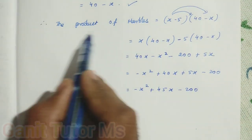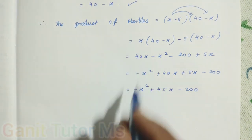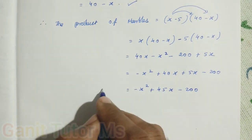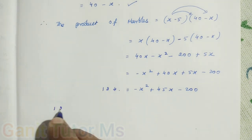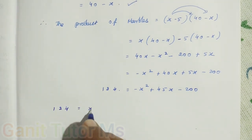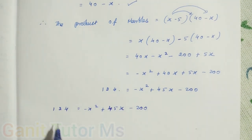What they given is the product of marbles. How much they given? It is 124. So the product of marbles, which is equal to 124. So which is equal to 124. Now we can solve the 124 also. 124 equal to minus x squared plus 45x minus 200. Then we can write. This 124 will go, that's a little minus.